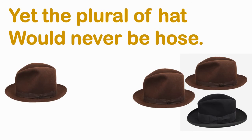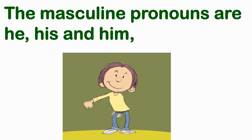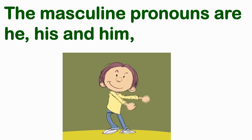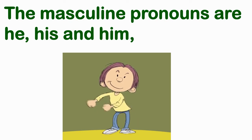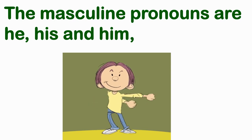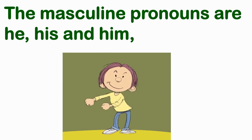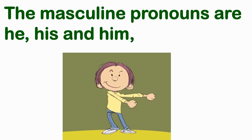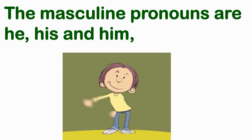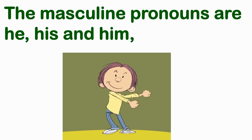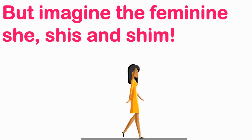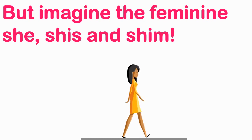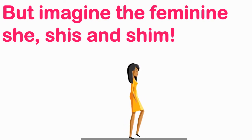The masculine pronouns are he, his and him. Pronouns are words used in place of a noun. Masculine means male or a boy. Examples: 'He is a boy,' 'His hair is black,' 'I spoke to him.' But imagine the feminine — she, shiz and shim. Feminine means female or a girl. The feminine form of he is she. The feminine form of his is her, but not shiz. The feminine form of him is also her, and not shim.